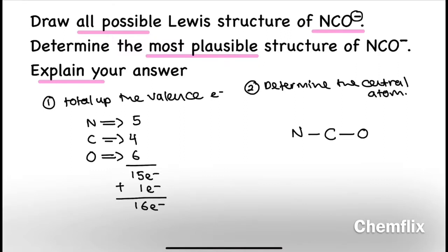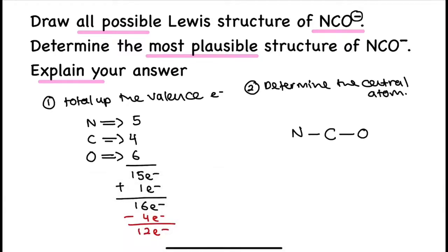That would be the minimum bond present between the atoms. Since 2 single bonds give a total of 4 bonding pair electrons, subtract that value from the total electrons we have. This gives us 12 electrons remaining.